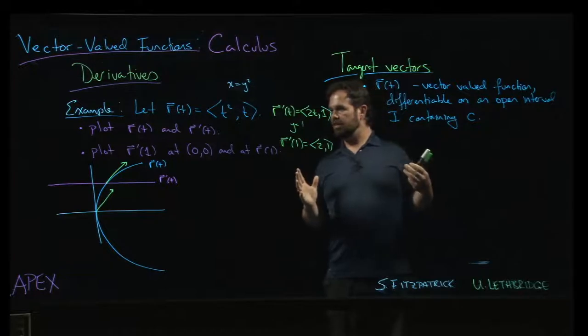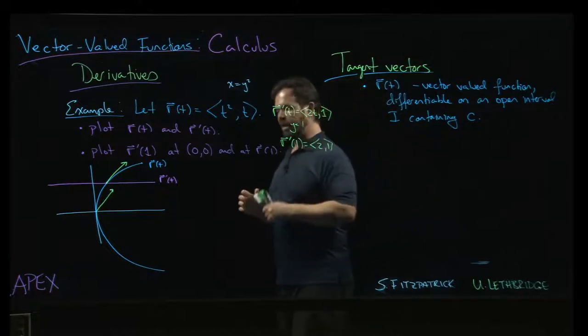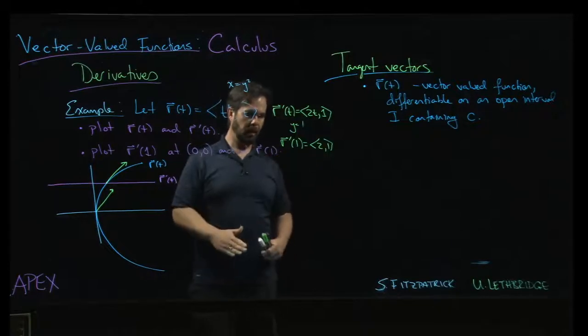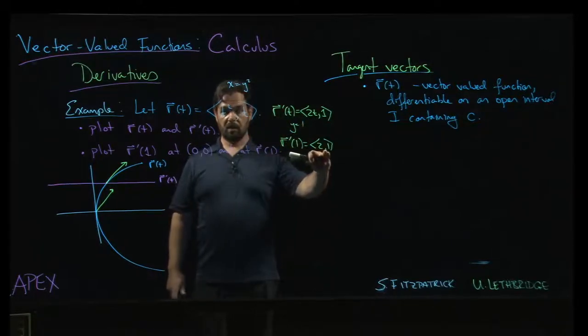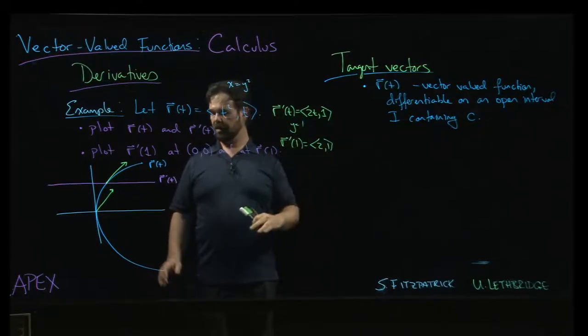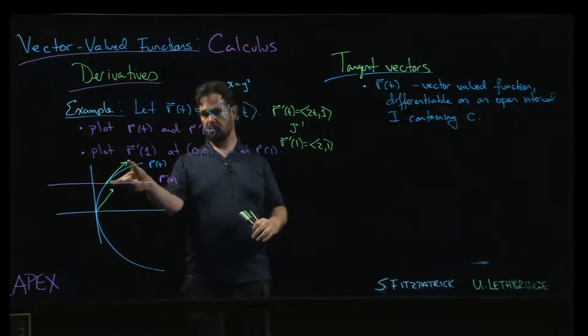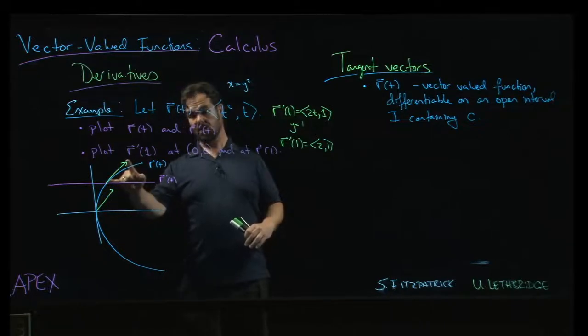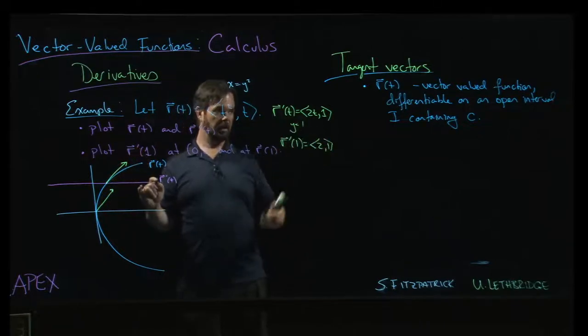So the idea here is that when you take the derivative of a vector-valued function and you evaluate at a point, that vector that you get by evaluating the derivative at a point is tangent to the curve. If I drew the tangent line at that point, that vector would point in the direction of the line.